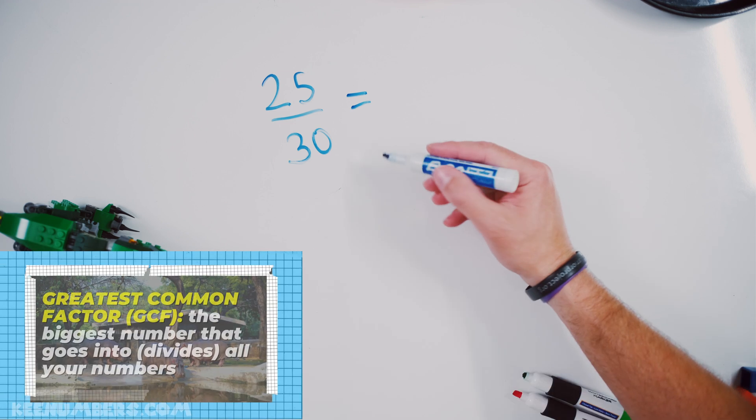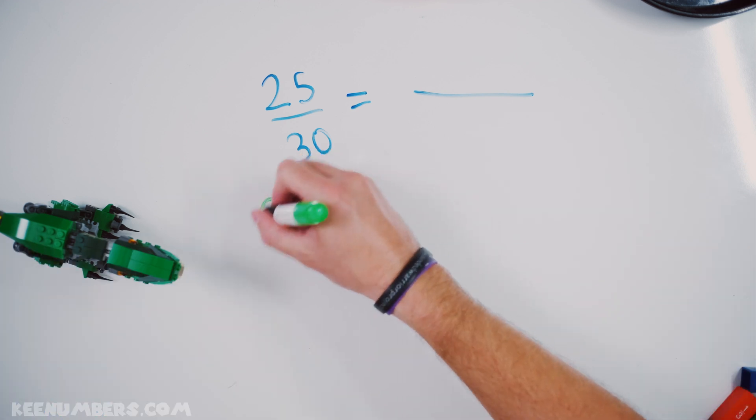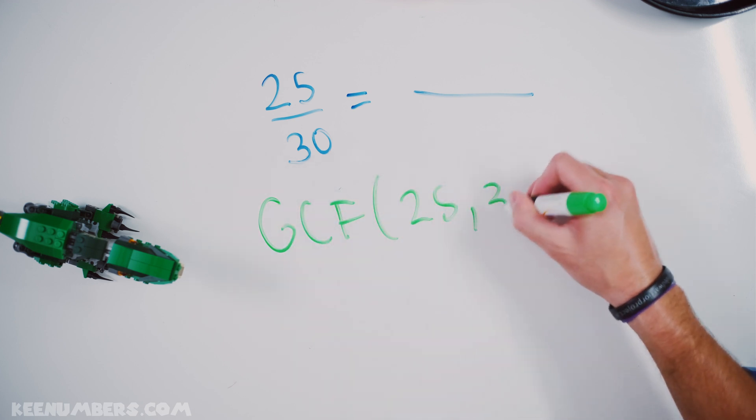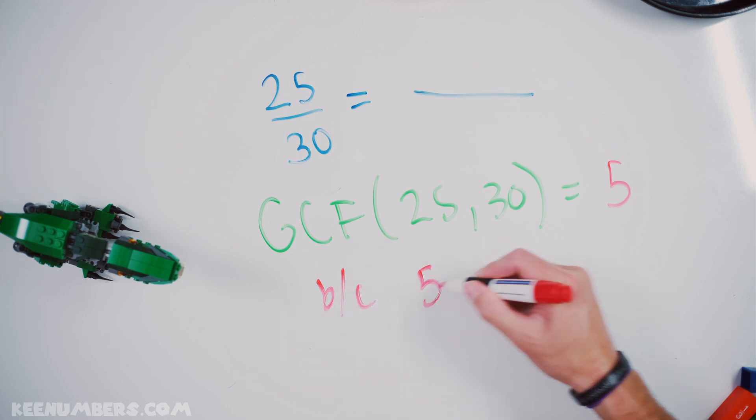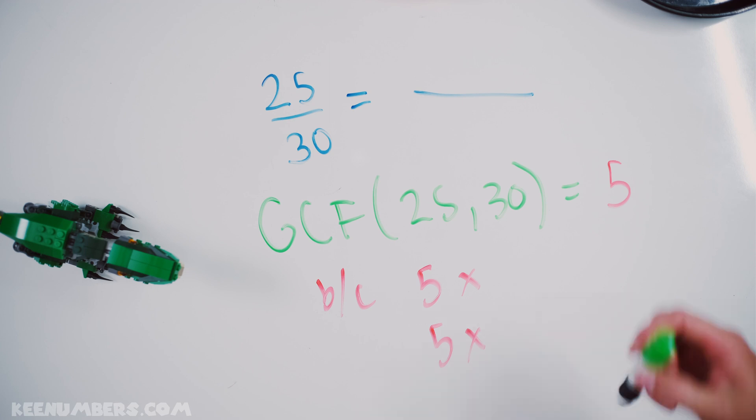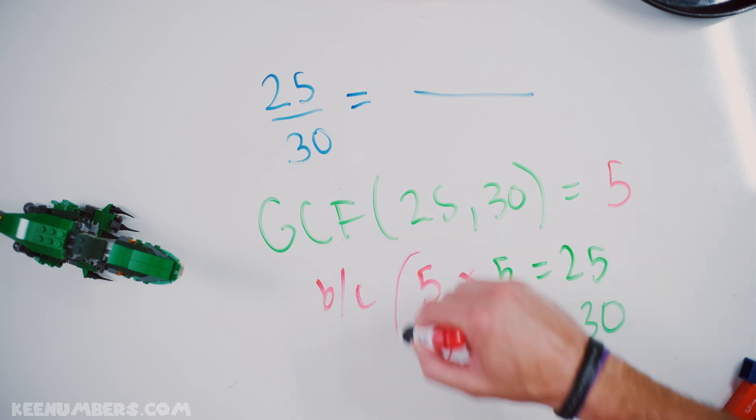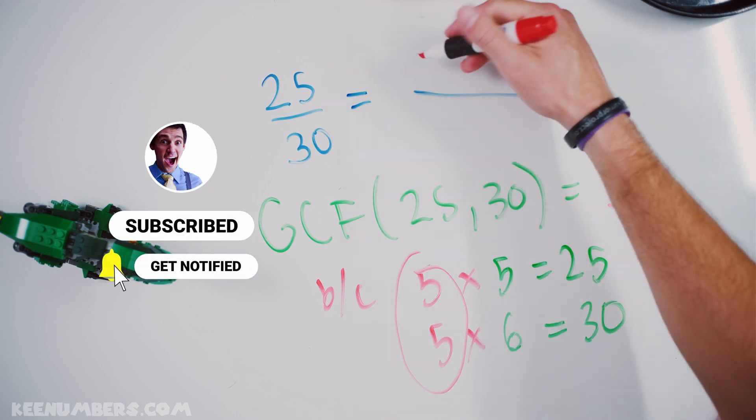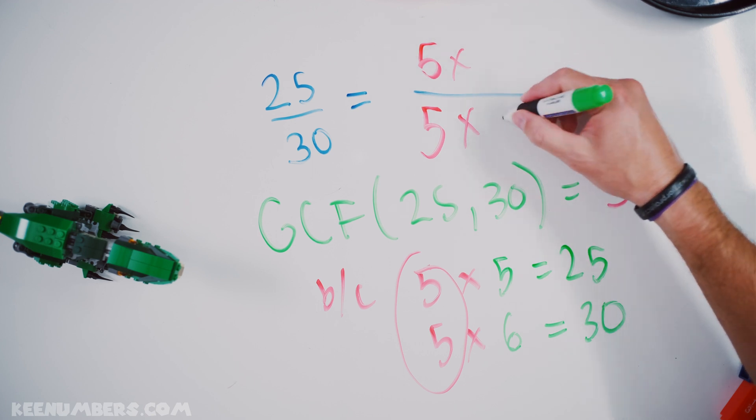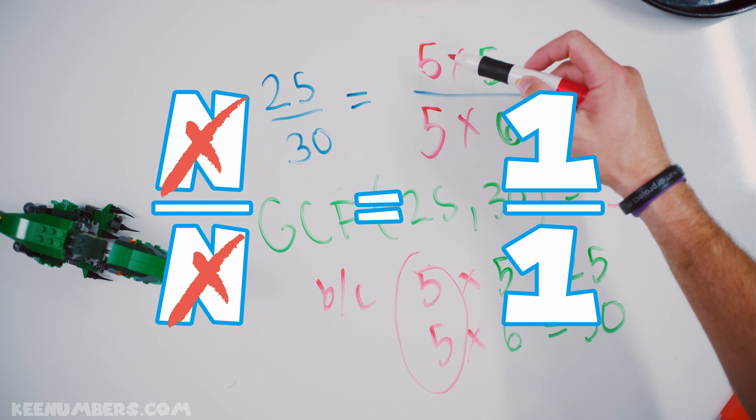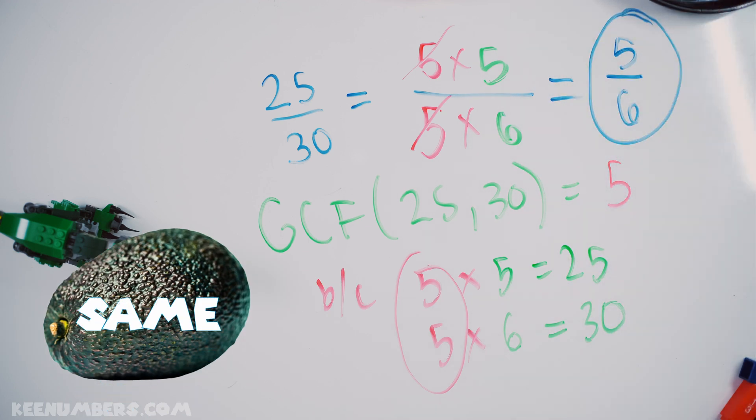Let's simplify 25 thirtieths. Oh, this looks scary, but don't worry. What's the greatest common factor of 25 and 30? The GCF of 25 and 30. That's going to be, I bet you can see it. It's five. Because we have five fives in 25. And we have five sixes in 30. That is our GCF. So, we have five fives in 25. And we have five sixes in 30. And any number divided by itself is just one. So, we are left with five-sixths. That is our answer.